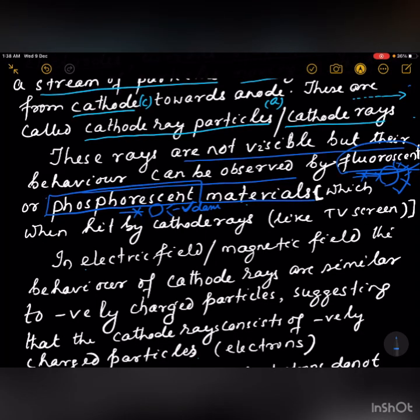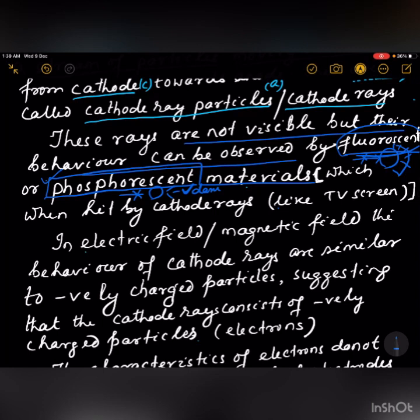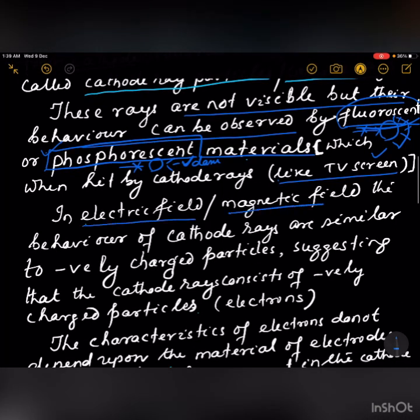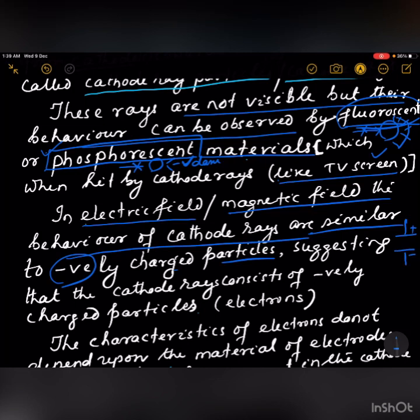When cathode rays hit phosphorescent materials, they glow. Fluorescent materials glow when cathode rays fall on them, but stop glowing in the absence of cathode rays. Phosphorescent materials, however, glow even in the absence of cathode rays. This effect can be observed in a TV screen. In both electric and magnetic fields, the behavior of cathode rays is similar to that of negatively charged particles.